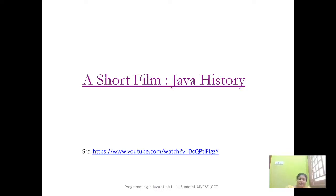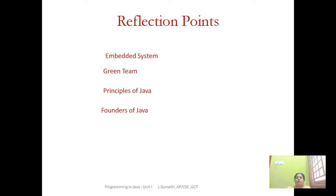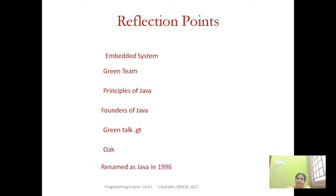You could have gained some information from that video. Java was mainly developed for embedded systems, and the team intended for developing it was called the Green Team. They discussed some principles of Java. The founders of Java — mainly James Gosling is called the father of Java. Initially it was named Green Talk with file extension .gt; now we use .java. Then it was renamed Oak, and due to trademark issues it was renamed Java in 1996.